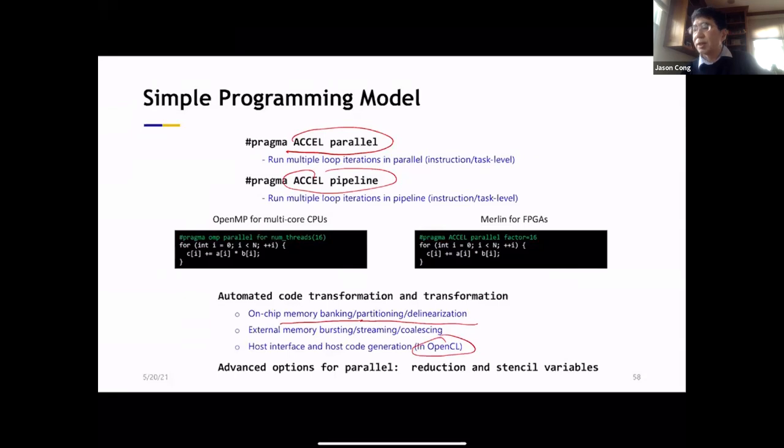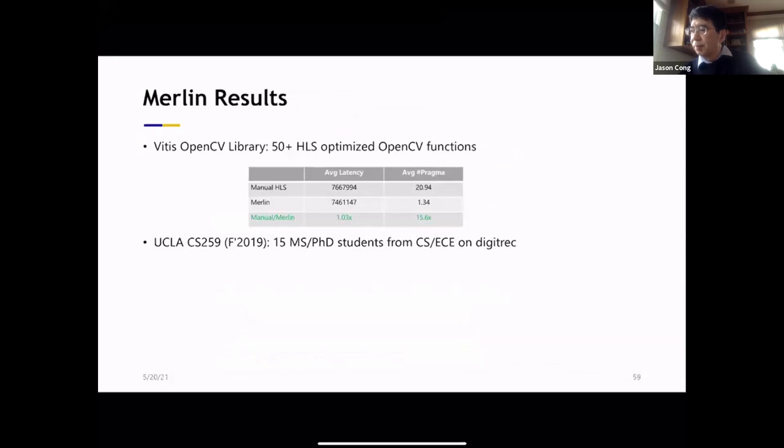So you have to specify these two pragmas. Behind the scene, under the hood, you will do a number of optimizations which I talked about. Automatic memory banking, partitioning, tiling, coalescing, and memory burst streaming, and also generate host and FPGA code on top using OpenCL as the back end. You can also have advanced options for the parallel pragma. You can specify the reduction or stencil variables. So this gives us much higher productivity.